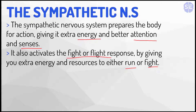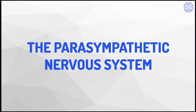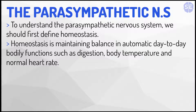Now we're done with the sympathetic nervous system, we'll go into the parasympathetic nervous system. To understand the parasympathetic nervous system, we should first define homeostasis. Homeostasis is maintaining balance in automatic day-to-day bodily functions, such as digestion, body temperature, and normal heart rate.